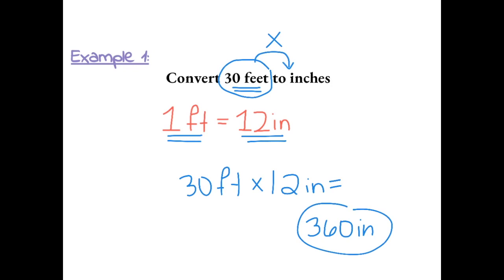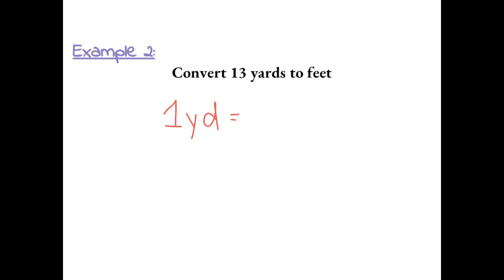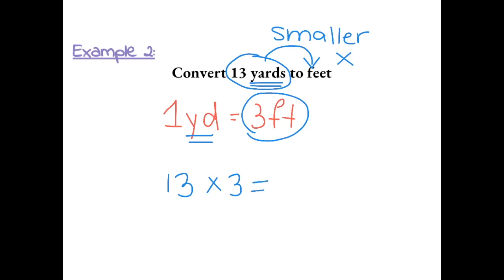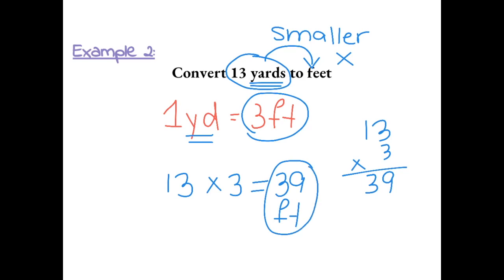So 30 feet is 360 inches. Example 2: Convert 13 yards to feet. We know that 1 yard is equal to 3 feet, so yards is the bigger unit — and yards is the unit we have, so we're converting to a smaller unit. Bigger to smaller means we multiply. We take 13 yards and multiply by 3 feet. 13 times 3 gives us 39 feet. So 13 yards is equal to 39 feet.